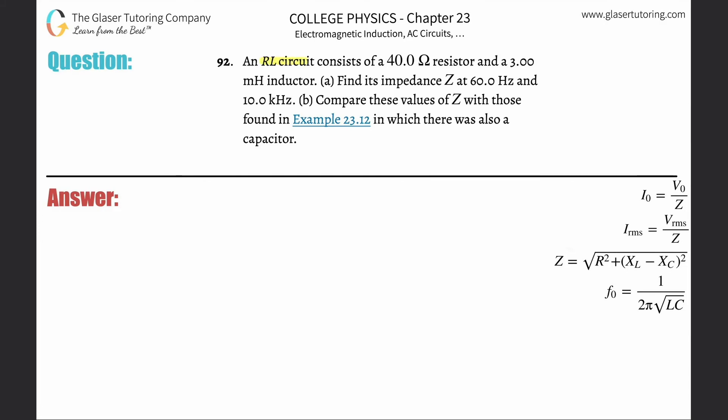Number 92: An RL circuit consists of a 40 ohm resistor and a 3 millihenry inductor. Letter A: find its impedance Z at 60 hertz and 10 kilohertz. Whenever they tell you have an RL circuit, basically what they mean is that you have a resistor in that circuit and you have an inductor in that circuit.